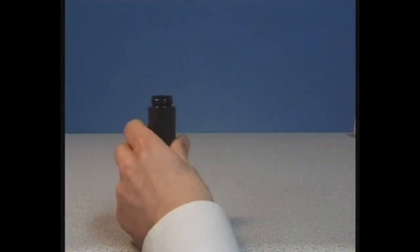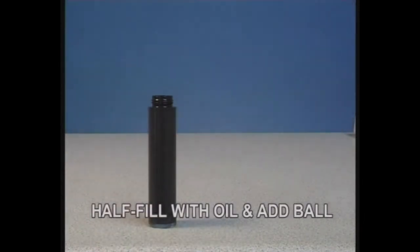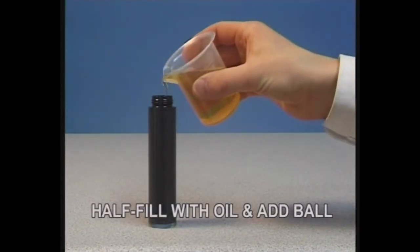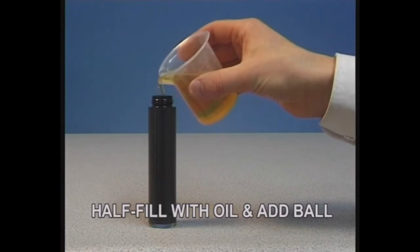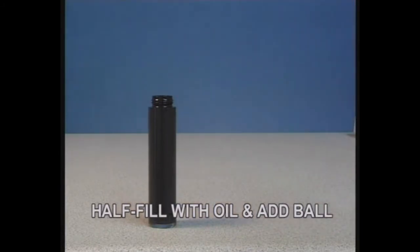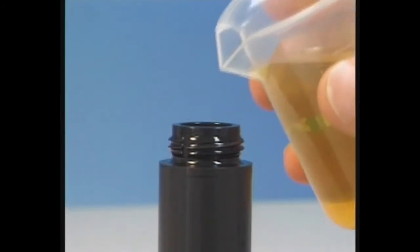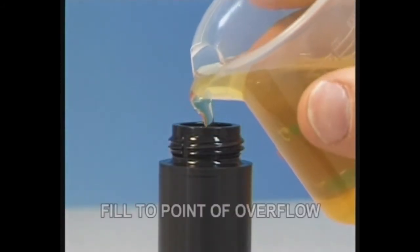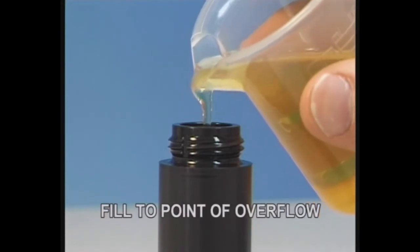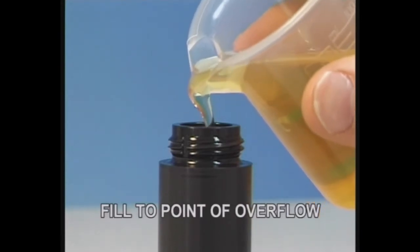Remove one end cap and half fill the visco tube with the sample oil. Place the ball in the visco tube. Top up the visco tube with the sample oil ensuring that the tube is completely full to the point of overflowing.